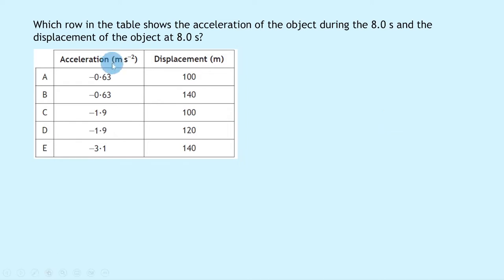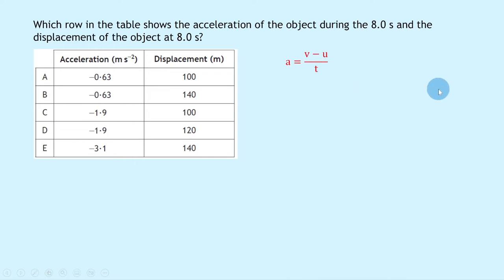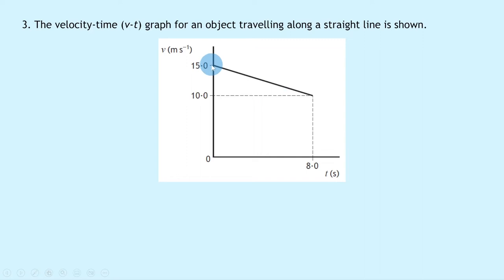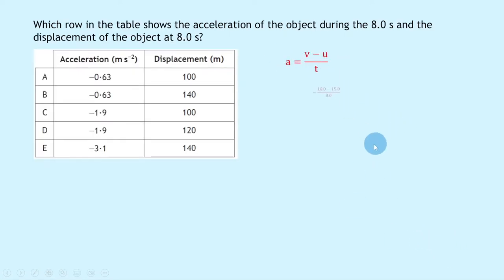To find acceleration from a velocity-time graph, we can use a = (v − u) / t, which is the first equation of motion rearranged. Our initial speed u is 15.0 m/s, final speed v is 10.0 m/s, and time is 8.0 seconds. So we have (10.0 − 15.0) / 8.0 = −5 / 8, giving an answer of minus 0.63 m/s². This narrows our options down to A and B.